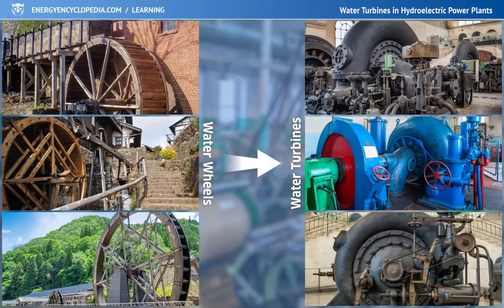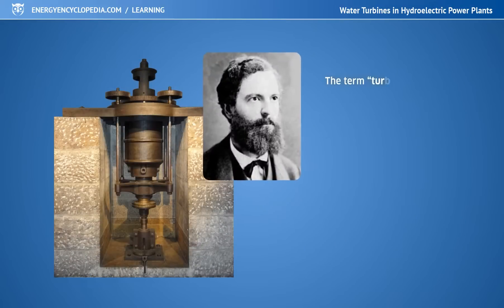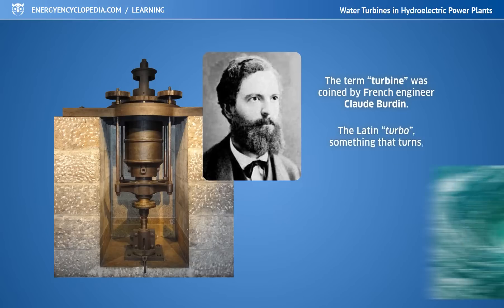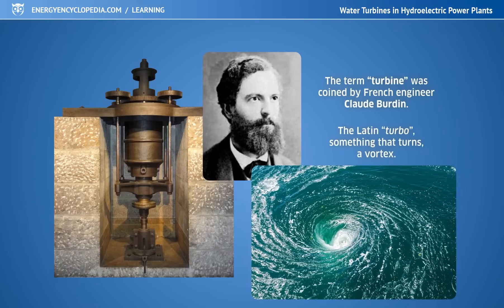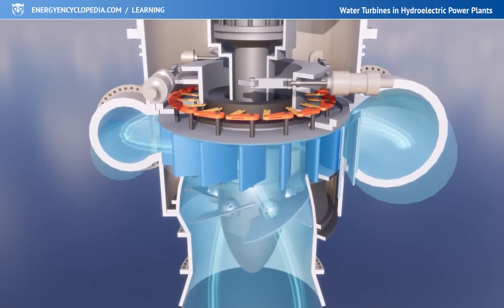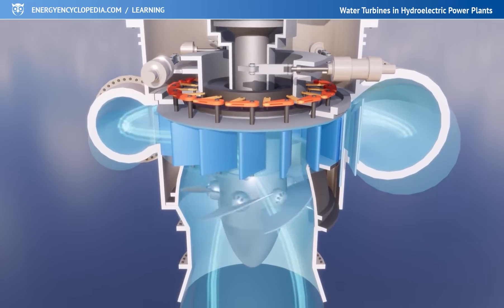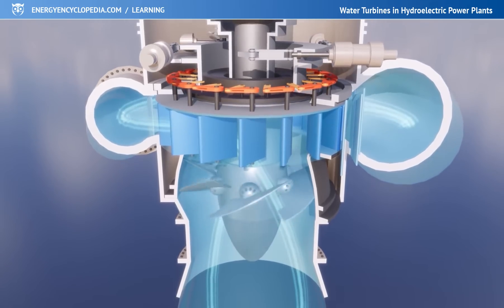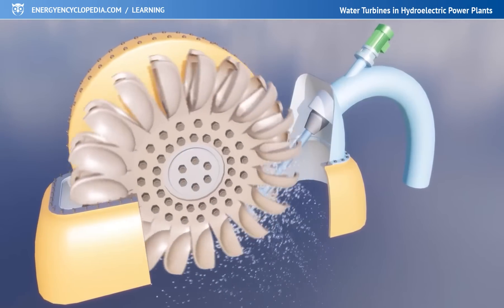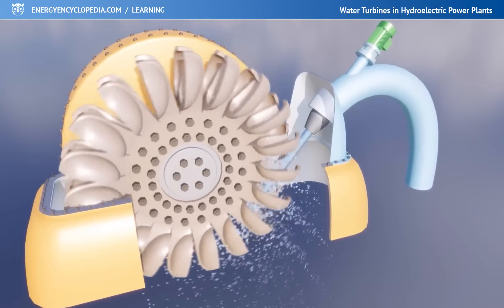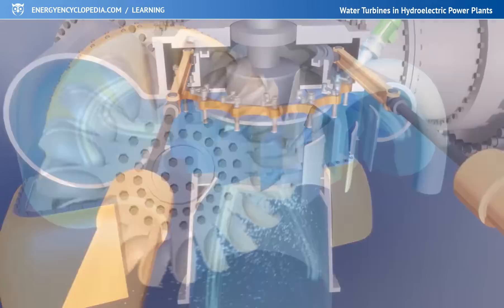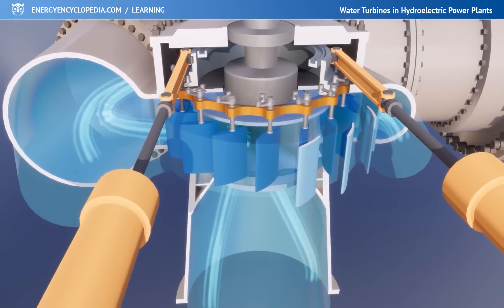The first to use the term turbine was French engineer Claude Bourdin at the beginning of the 19th century. The word is based on the Latin turbo — something that turns, a vortex. Turbines are based on the use of the vortex-like component of the movement of water, allowing them to be small, faster, and much more powerful than the old water wheels.